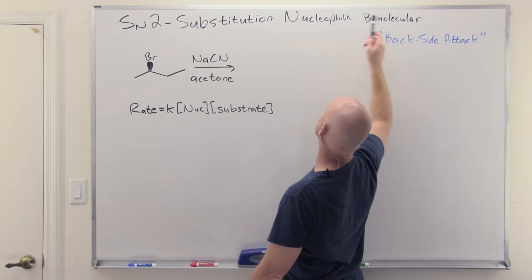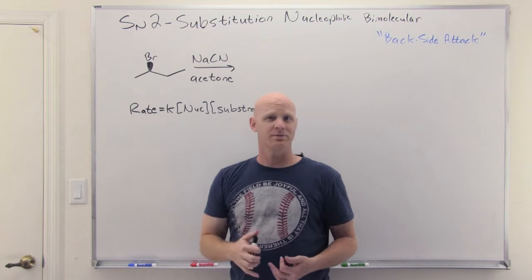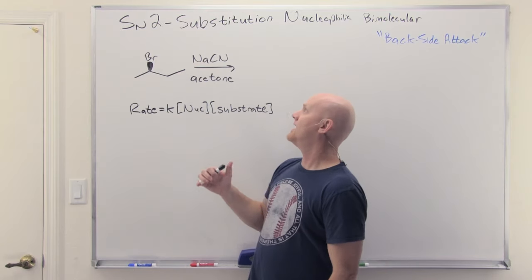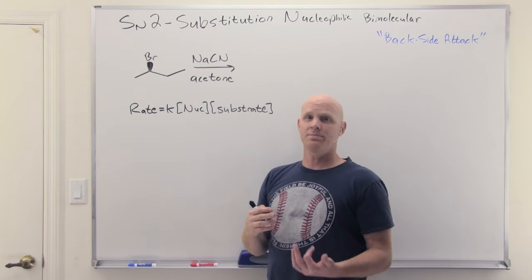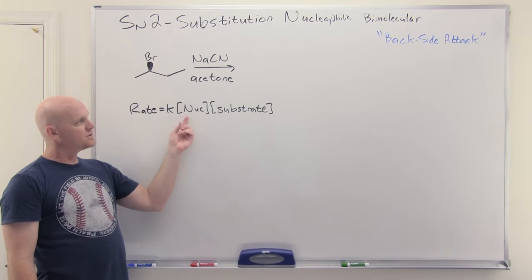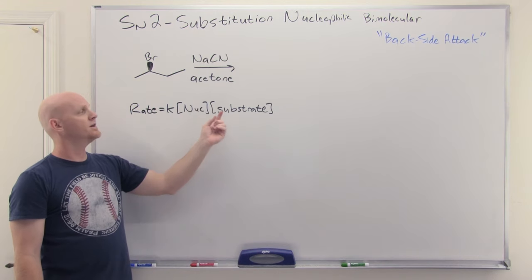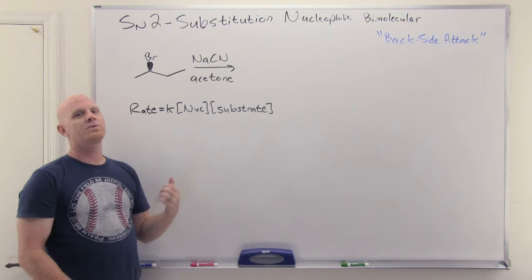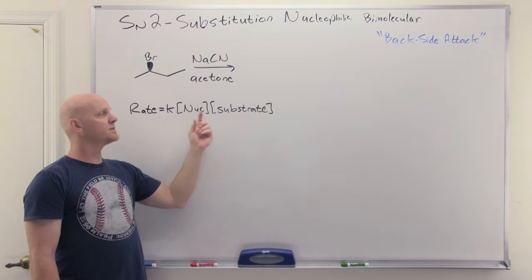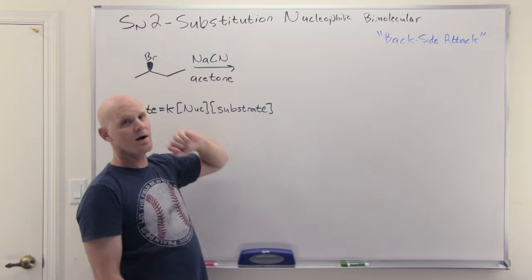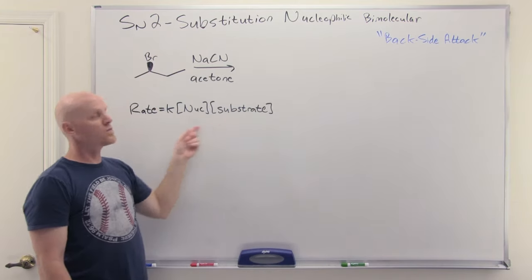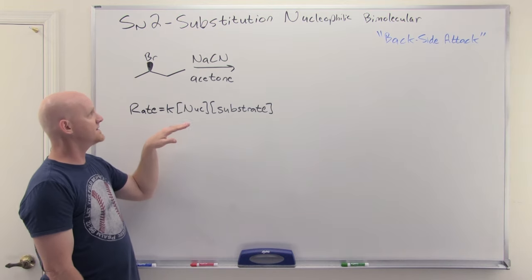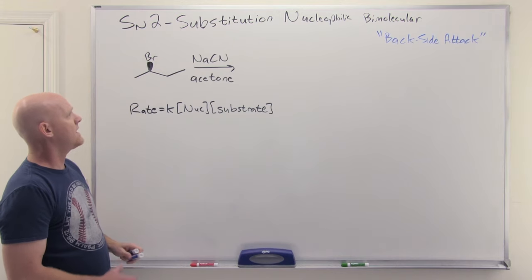The first substitution reaction we'll cover is SN2. SN2 stands for substitution nucleophilic bimolecular. 'Bimolecular' is a kinetics term — it refers to the fact that two reactant molecules are involved in the rate-determining step, which for SN2 is usually the only step. Because both molecules are involved in that rate-determining step, they both appear in the rate law. A typical SN2 rate law shows the nucleophile and substrate both as first order — no written exponent implies an exponent of one — making it second order overall. That's where the 'two' comes from: bimolecular rate laws are always second order.